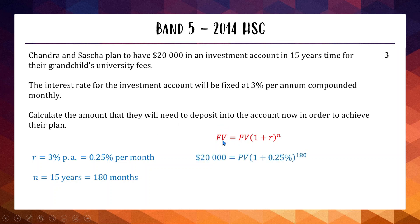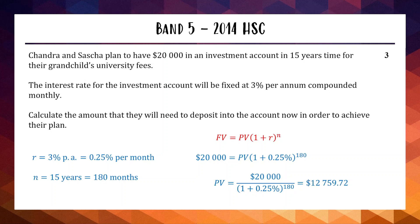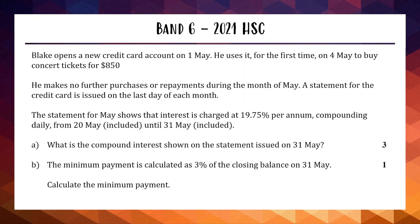We know the future value is $20,000 and need to find the present value. With r = 0.25% and n = 180 months, we rearrange the future value formula by dividing both sides by (1 + r)ⁿ to isolate the present value. Feeding this into the calculator gives approximately $12,759. If you're investing about $13,000 and leaving it for 15 years to reach $20,000, that seems reasonable. That's worth three marks — spot the compound period, convert your rate and time, and rearrange confidently.